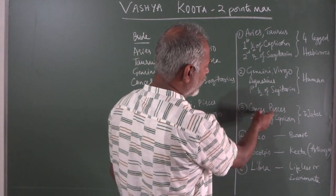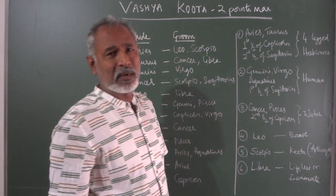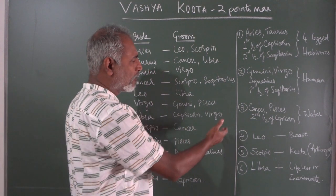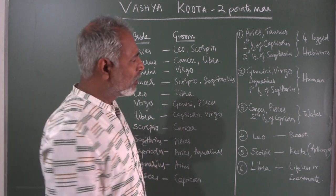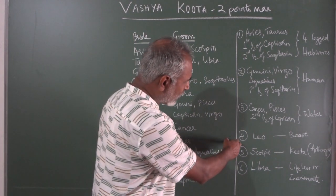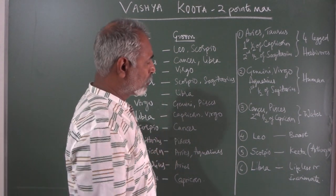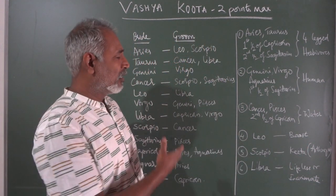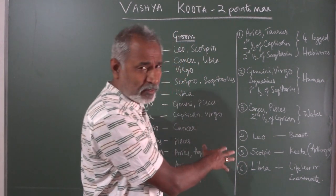The third classification is Cancer and Pisces, along with the second half of Capricorn — these are Jhalachara, water animals: Cancer is a crab, Pisces is a fish, and the second half of Capricorn is a crocodile — so three water body animals. The fourth classification is Leo, which is a beast and a carnivore — though four-legged, it is a carnivore. The fifth classification is Scorpio, which is Keta — an Arthropoda with eight legs, a scorpion. This is separate from all other classifications.